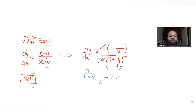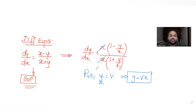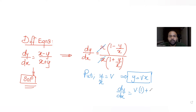I can substitute y/x as another variable, let's say v, so I'm putting y as v·x. Let's understand what dy/dx becomes. Since y = v·x, taking the derivative using the product rule: it becomes v times the derivative of x (which is 1) plus x times the derivative of v with respect to x, which is dv/dx.